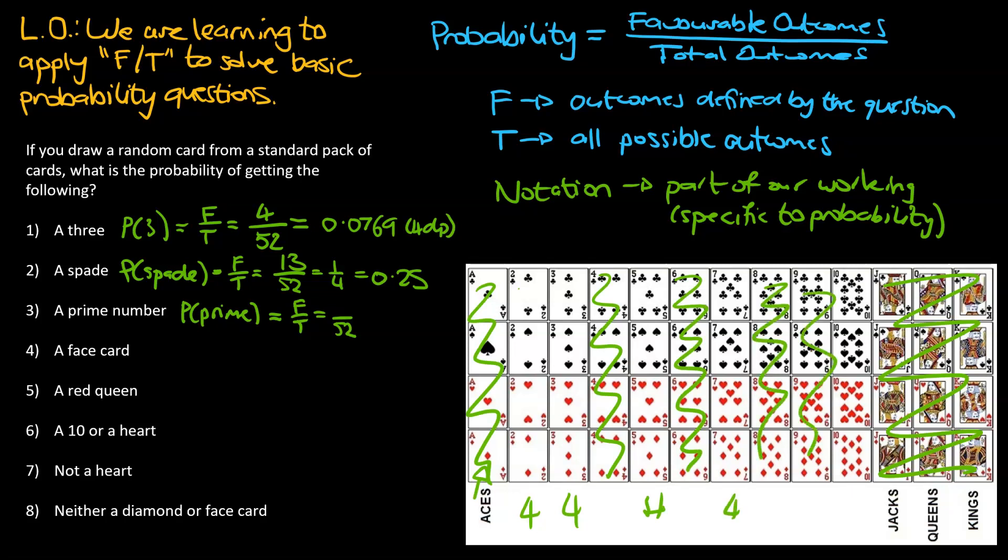Not fussed about the 8s, 9s, or 10s. So from that, we've identified 16 cards which would have a prime number value on them. So that means the favorable would be 16. And when you put that into your calculator, 16 divided by 52, that there is 0.3077.